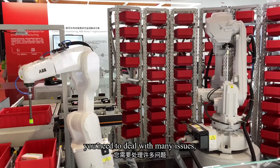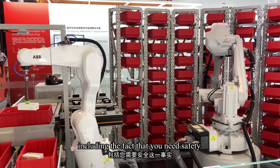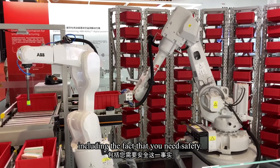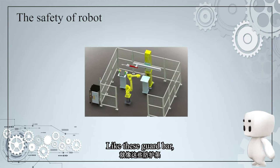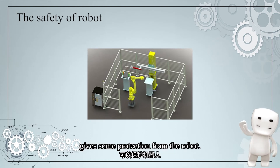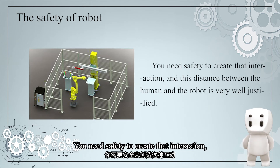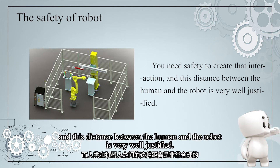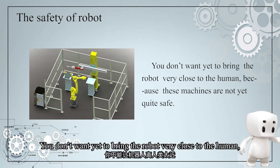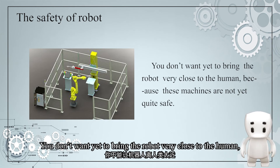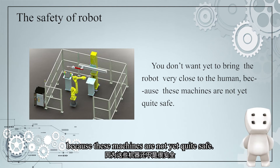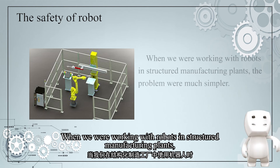You need to deal with many issues, including the fact that you need safety. A guide bar gives some protection from the robot — you need safety to create that interaction. This distance between the human and the robot is very well justified; you don't want to bring the robot very close to the human because these machines are not yet quite safe.